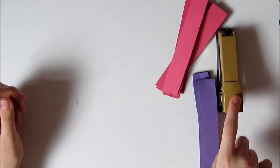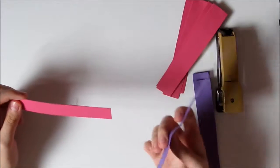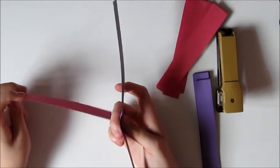This is where you're going to use your stapler. Take your first folded strip and your second folded strip, then open the second folded strip out.